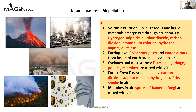Natural reasons of air pollution - volcanic eruption. When a volcanic eruption happens, gases released include hydrogen sulfide, sulfur dioxide, carbon dioxide, ammonium chloride, hydrogen vapor, and dust. Jabh bhi volcanic eruption hota hai to usme se jo smoke nikalta hai us smoke mein yeh sab chizein hoti hain jo air pollution cause karti hain.